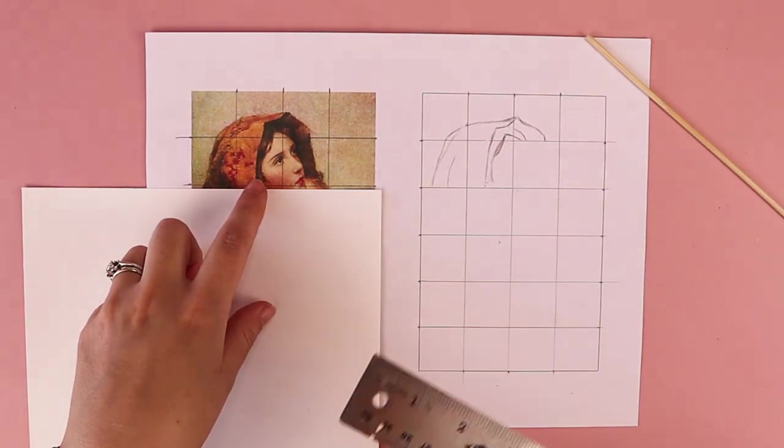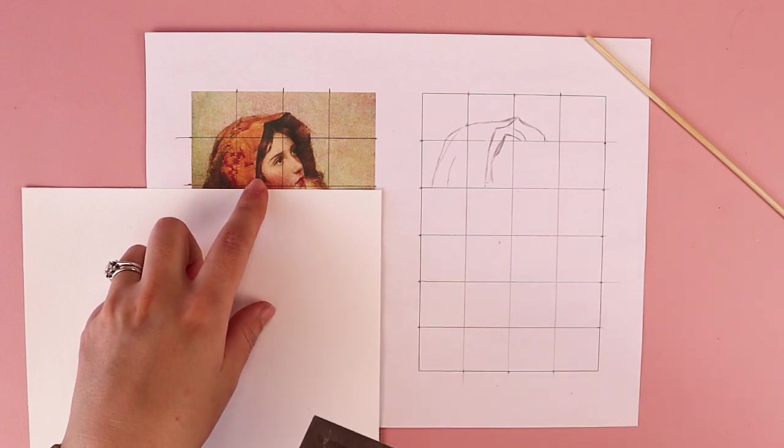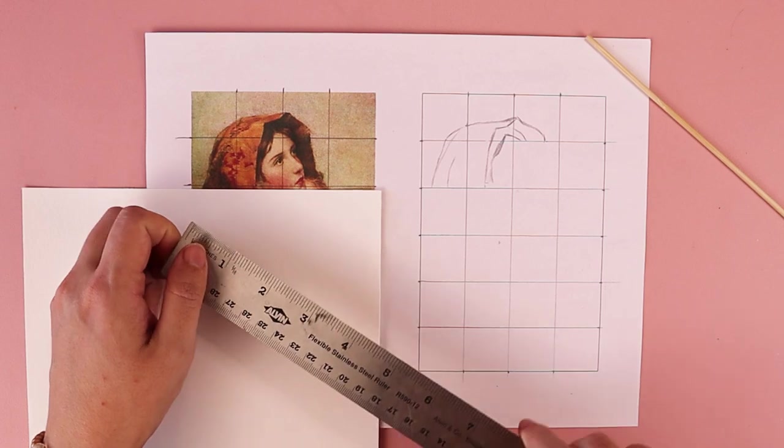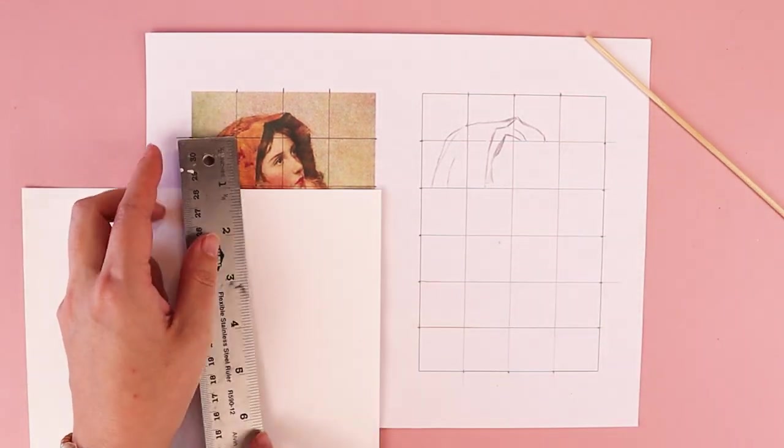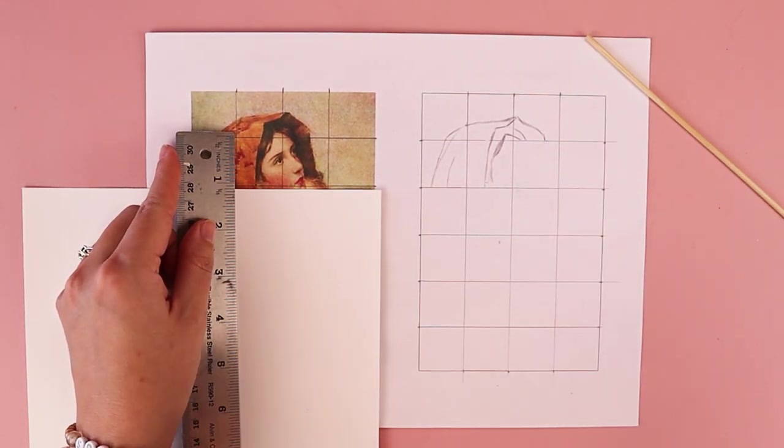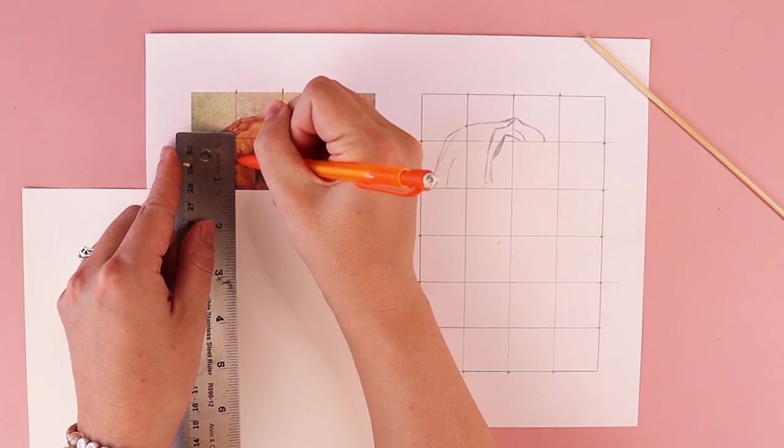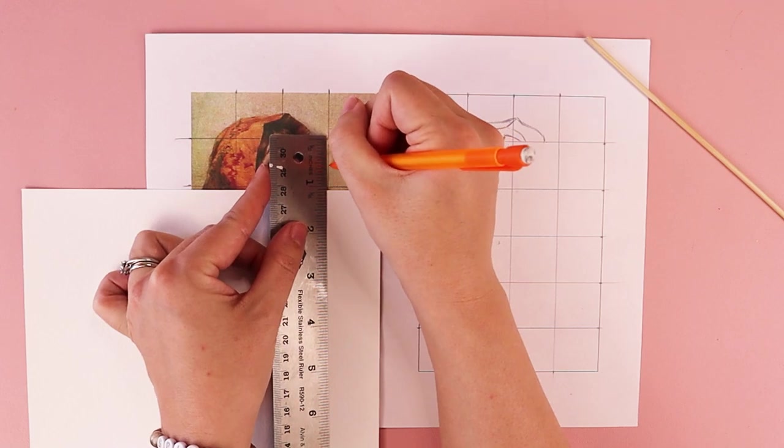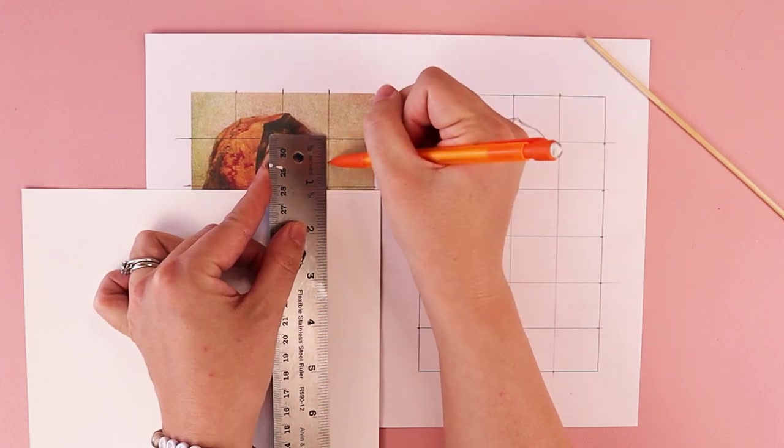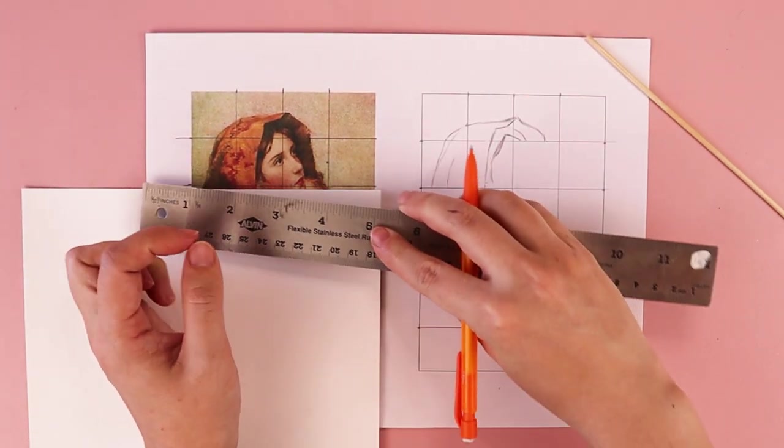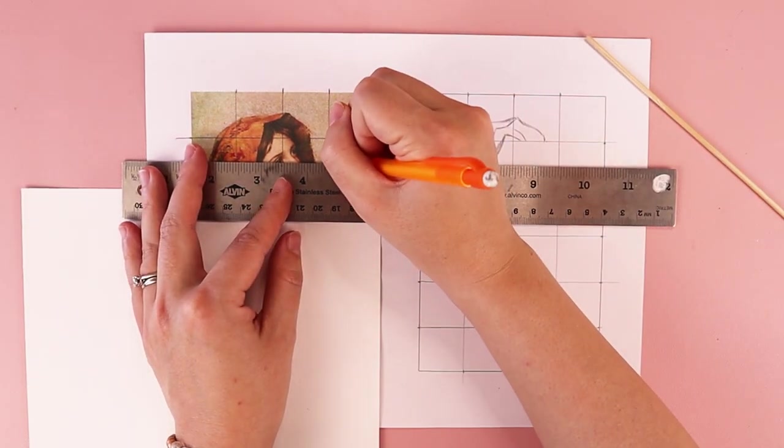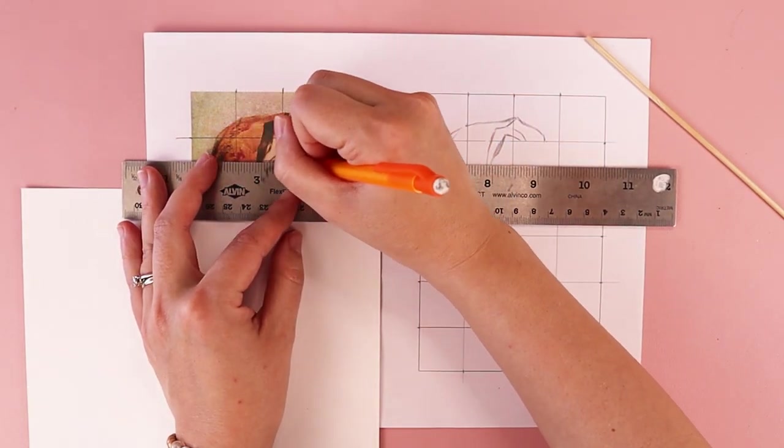So one thing you can do with your grids is you're not confined to just a single square. If you needed to, you could take a square that has more information on it, like in the face, and you can break that down into smaller pieces. So I think I'm going to break this one down into some smaller grids.